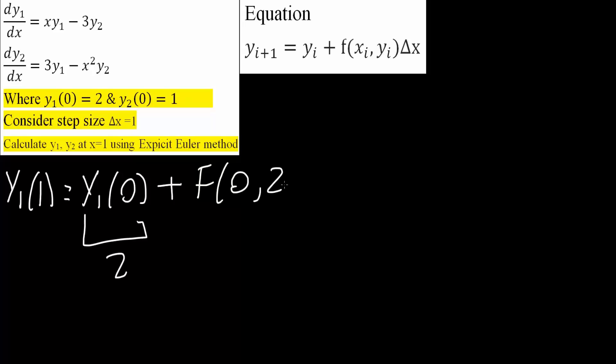And the change in x, the step size, says it's 1, so times 1. This will equal, so this right here we said was 2, plus, we have 0, comma 2.